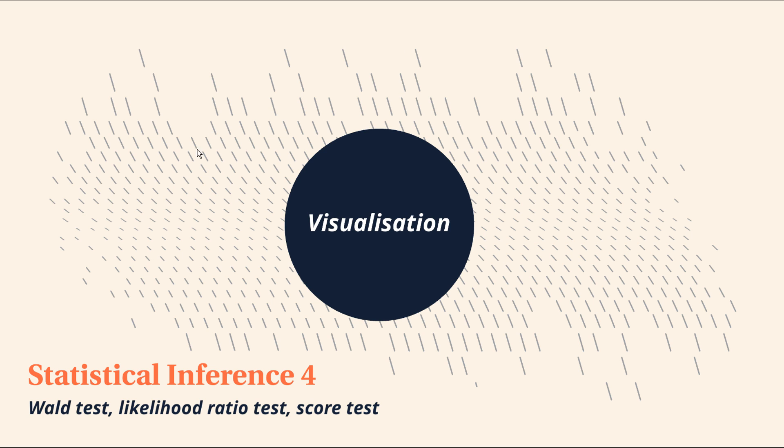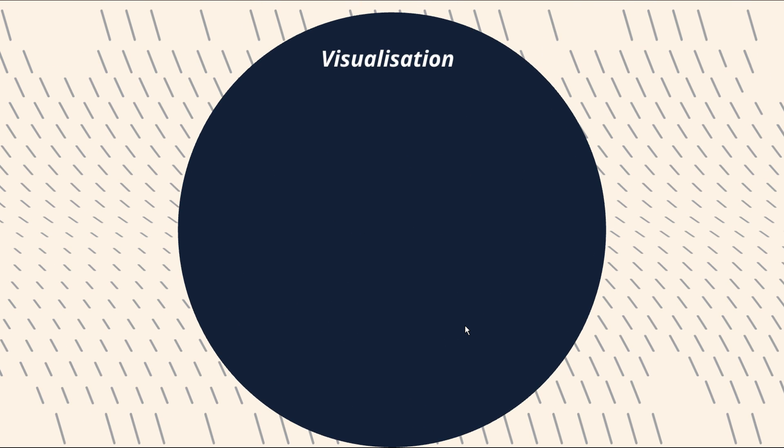Alright guys, a quick little video here for statistical inference 4 where we're looking at the Wald test, the likelihood ratio test, and the score test. And as you can see I've kept this quite simple. I haven't gone into too much detail, I just want to give you the overarching idea here. So we're going to skip straight into it and look at a visualization of what these three tests are actually looking at.